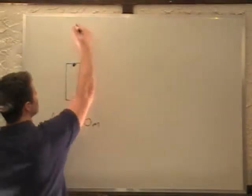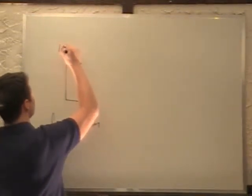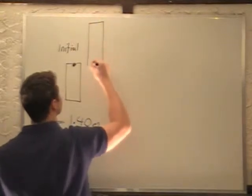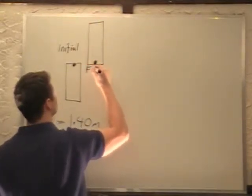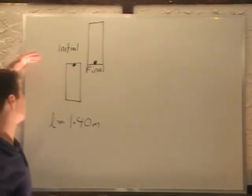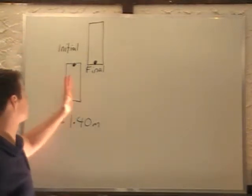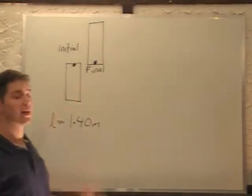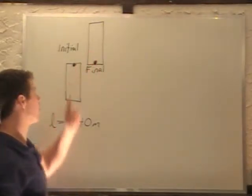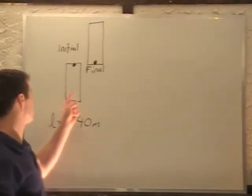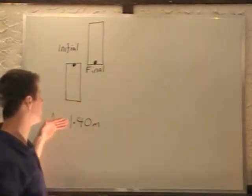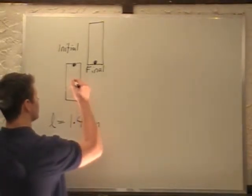If we spin it around and it just makes it to the top, this is our initial state and our final state is going to be up here. I say initial and final because we're going to use conservation of energy. This is going to be our initial point because this is the point that we have our maximum angular velocity. At the bottom we have our maximum angular velocity, at the top we have our minimum angular velocity.